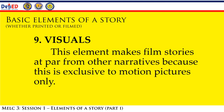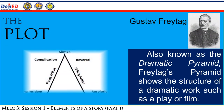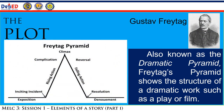Number nine is visuals. This element makes film stories stand apart from other narratives because it is exclusive to motion pictures only. Visuals transcend time and cultural boundaries. Among the given elements, only the plot, characters, and setting will be given emphasis in this module to avoid diverting from the learning competency.